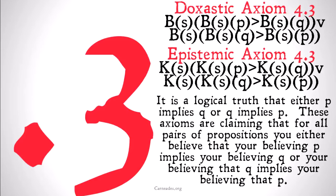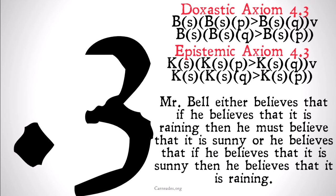While this is a logical truth, I'm still going to be quite skeptical of this axiom, not only for the reasons listed in 4.2 but for some new ones as well. This is basically saying that Mr. Bell either believes that if he believes it is raining then he must believe it is sunny, or he believes that if he believes it is sunny then he believes it is raining. My point is that this is a literal translation of that statement and it seems counterintuitive. Even if it works out logically that P implies Q or Q implies P, most people's intuitions will balk at believing that raining means sunny or sunny means raining — and people, even if it's logically implied, are not going to believe it.